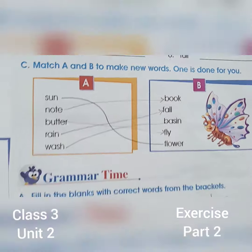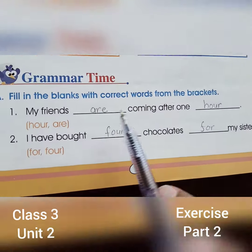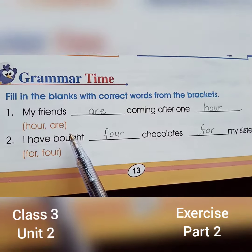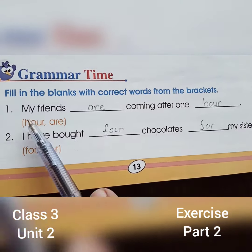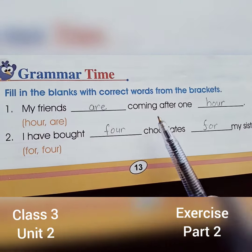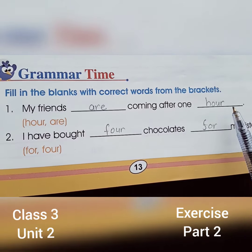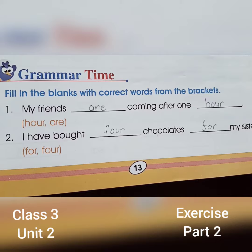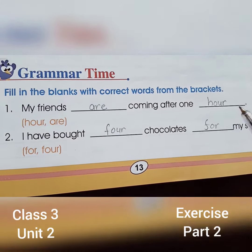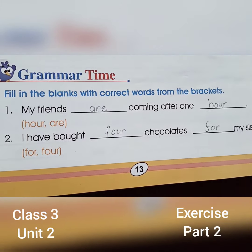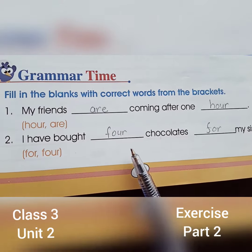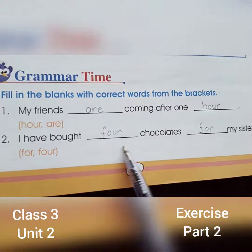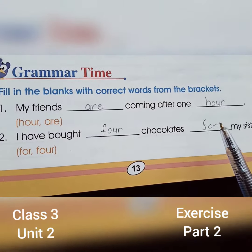इसके बाद Grammar Time. Fill in the blanks with correct words from the brackets. Bracket में जो हमारे पास words हैं, इससे हमने blanks fill करनी है. My friends are coming after one hour. देखें, दोनों words की pronunciation same है लेकिन meaning अलग है. 'Hour' मीन घंटा होता है. I have about four chocolates for my sister. इस 'four' के meaning अलग हैं.